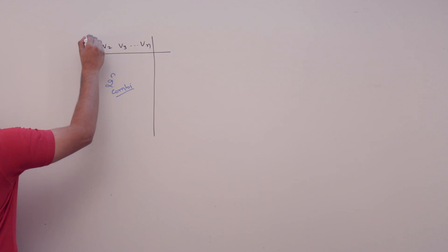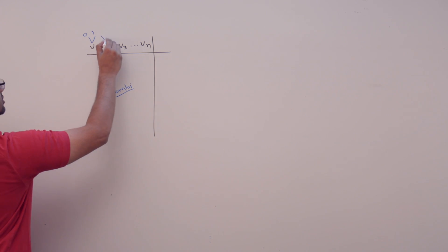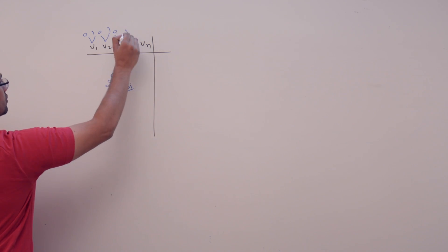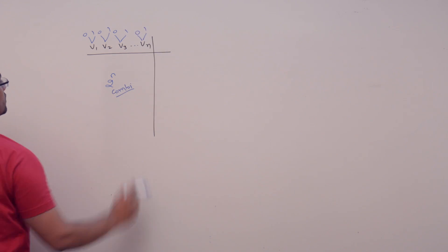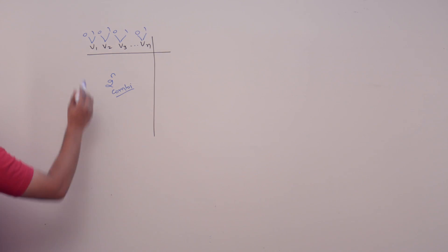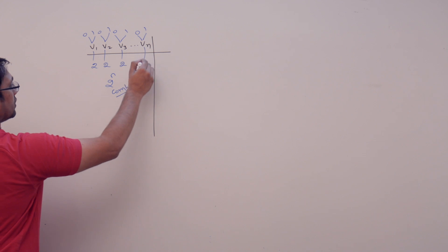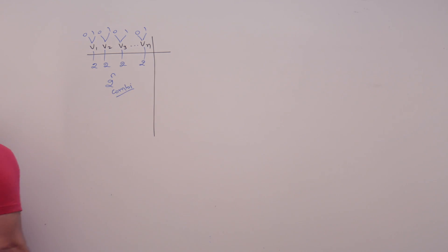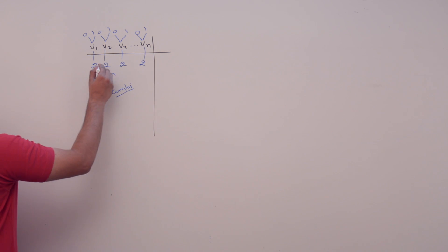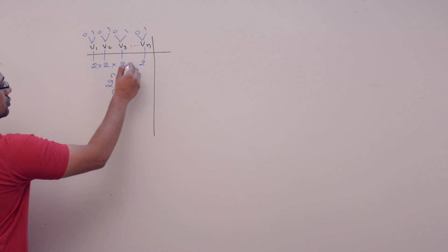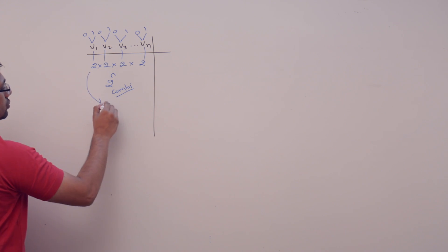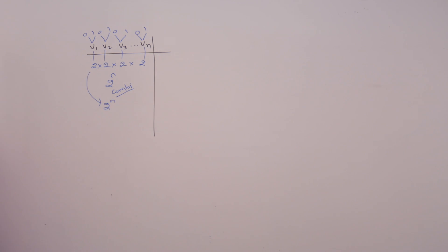Because each variable can assume two values: either 0 or 1. For every variable, we have two choices. So for n variables, the total number of choices is 2 × 2 × 2 × ... = 2 raised to power n choices, or 2 raised to power n different combinations.